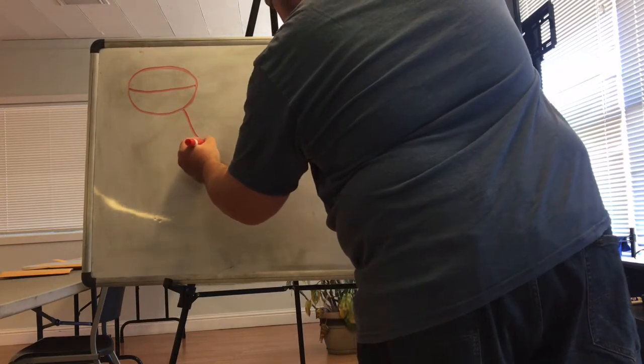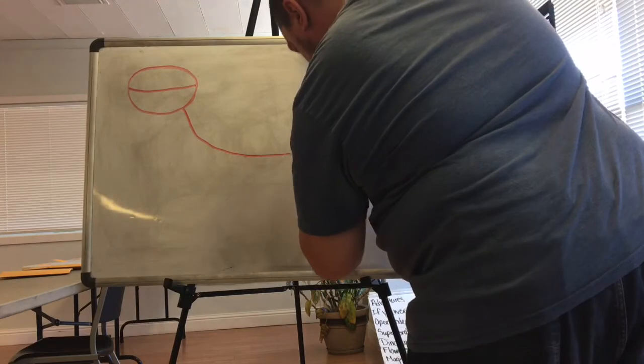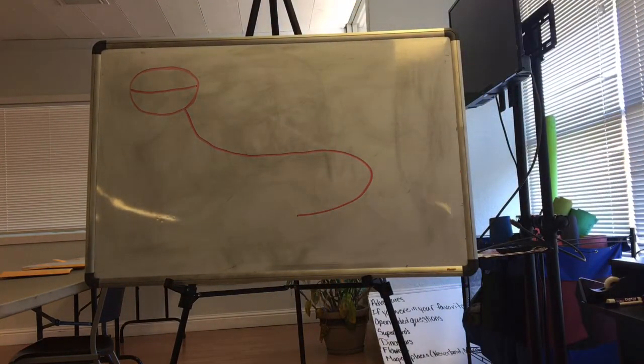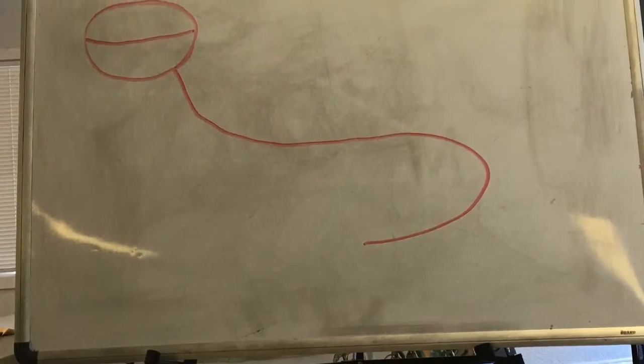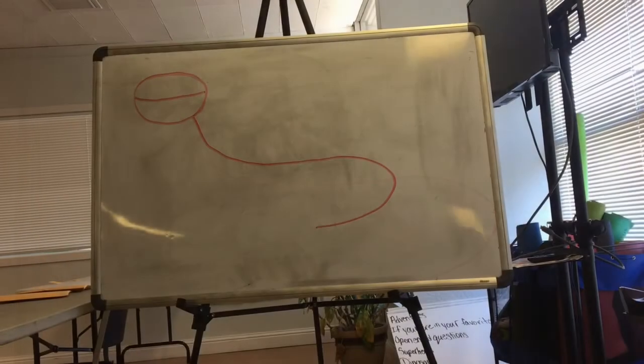Then we draw the spine line starting with the neck. Curve out for the back. Keep it kind of flat then curve down. Give us an idea where that tail will be. And there we have it. Our basic iguana skeleton.